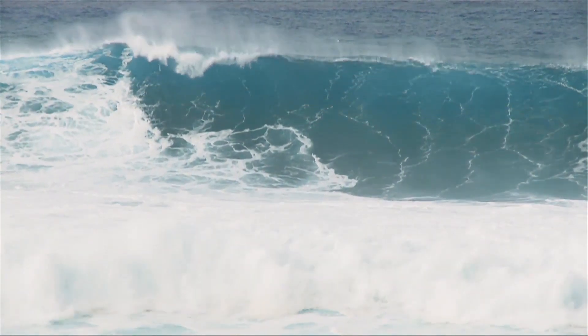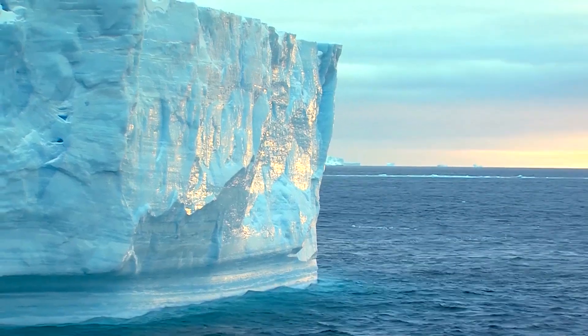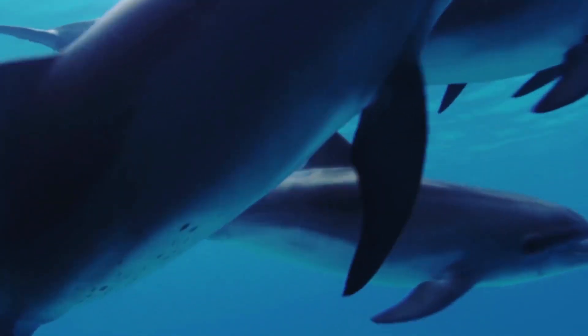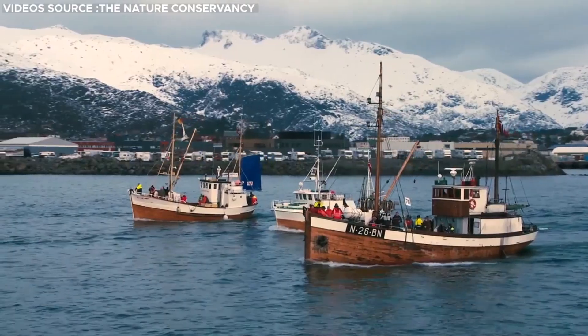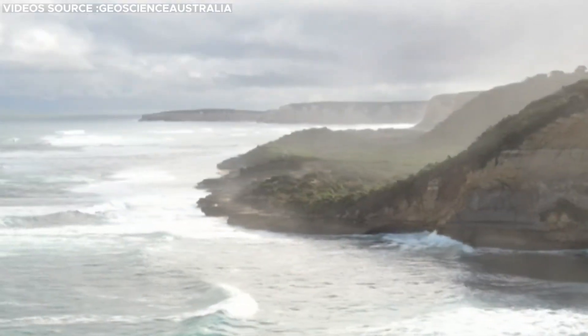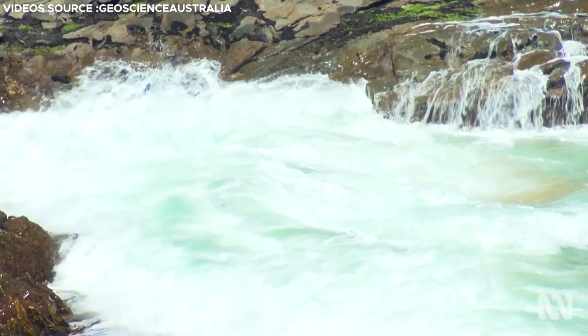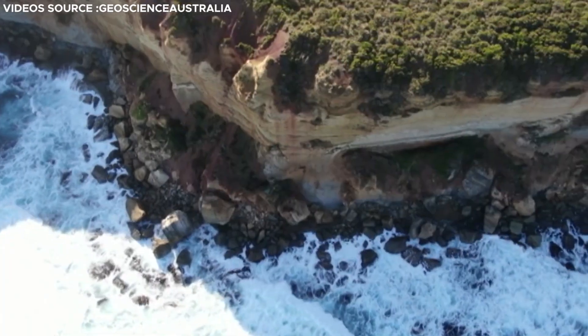The changes in tidal dynamics, resulting from the moon's disappearance, would extend beyond ecological impacts, influencing coastal regions and human activities. Coastal landscapes, shaped and eroded by the ebb and flow of tides, would undergo transformation.